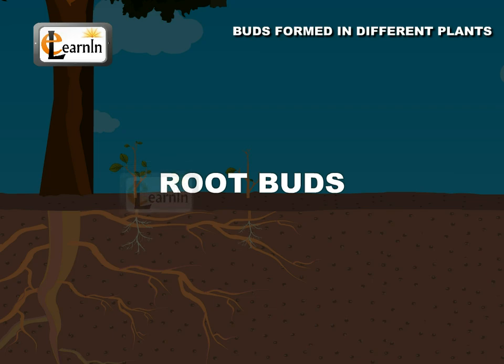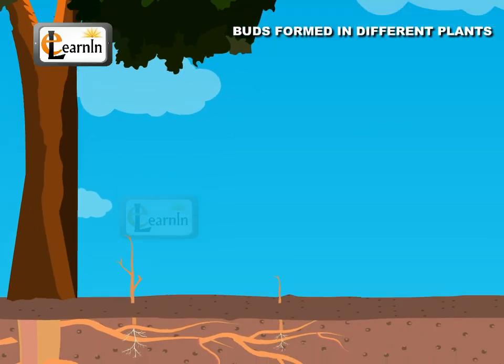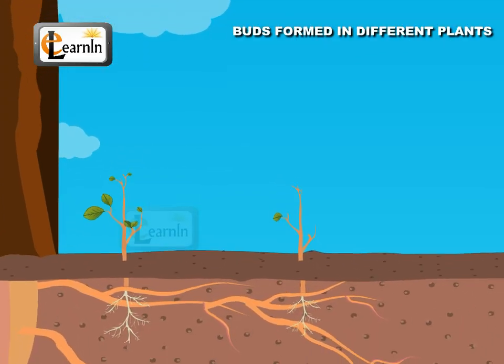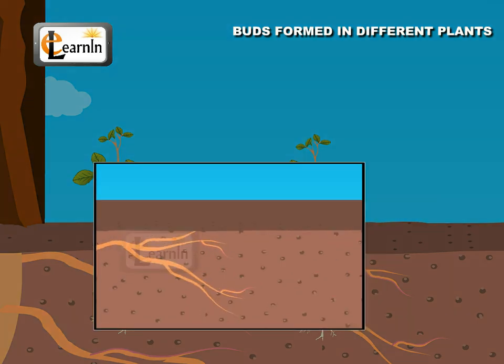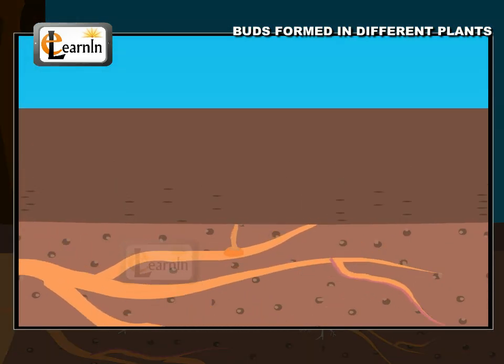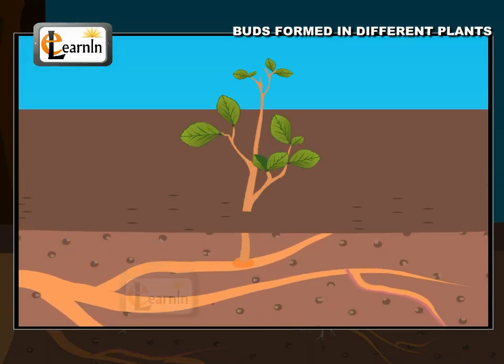Root buds: In curry leaf plant and neem, young plants develop from buds present on the root. They develop into independent plants.